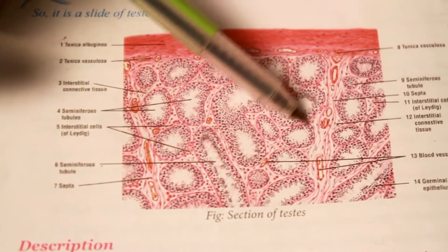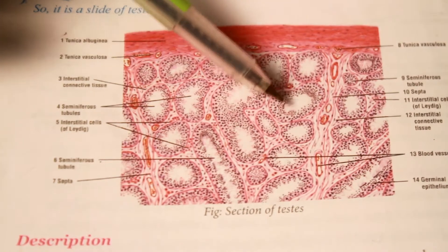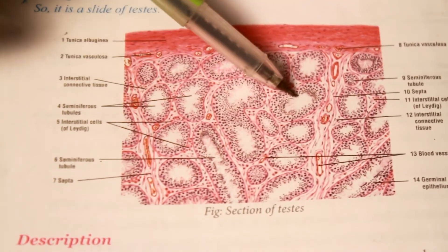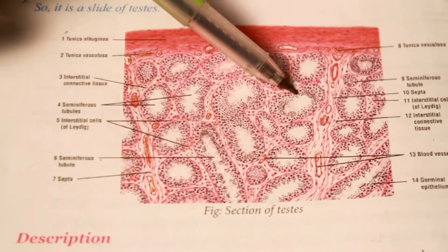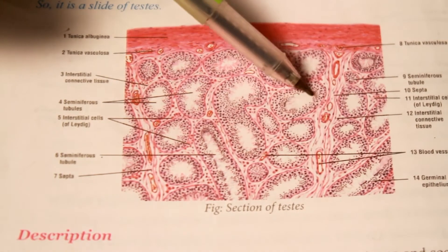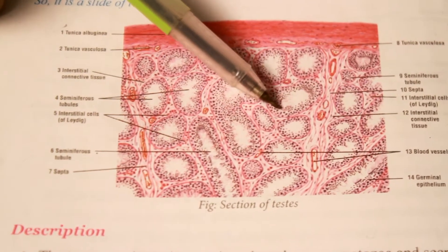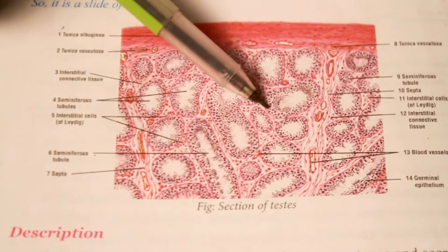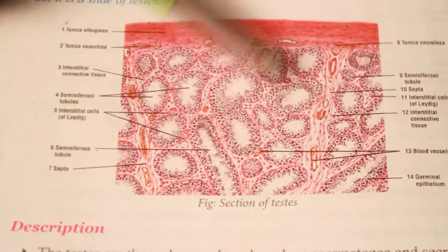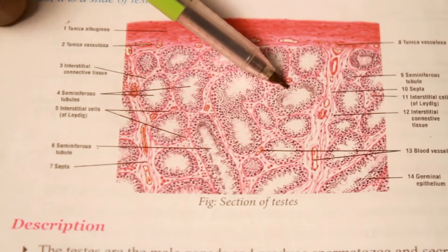Between the lobules there are interstitial cells of Leydig. Each seminiferous tubule is internally lined by Sertoli cells. Sertoli cells are closely related with the basal lamina of the seminiferous tubules. Each Sertoli cell is connected to the Sertoli cells on both sides by a tight junction, and these form the blood-testis barrier.